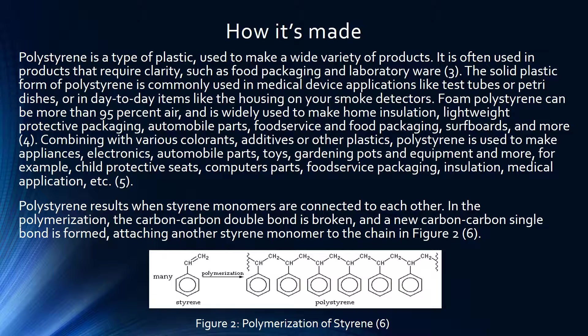Polystyrene is widely used in a variety of products that require clarity, such as food packaging and laboratory ware. The solid plastic form is commonly used in medical device applications like test tubes, petri dishes, and similar items. Combined with various colorants and additives, polystyrene is also used to make electronics, automobile parts, toys, insulation, and medical applications.